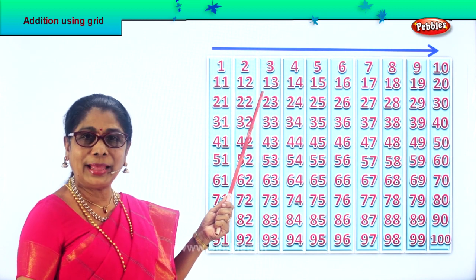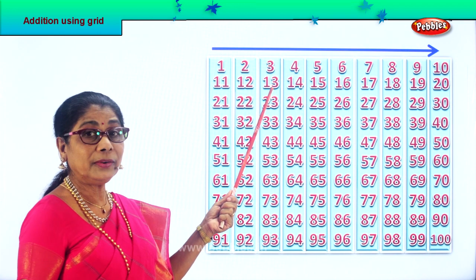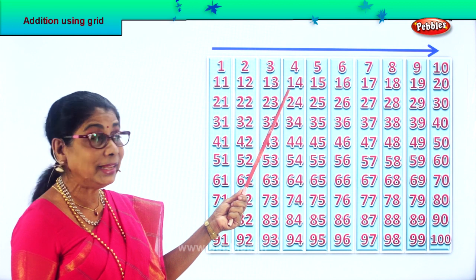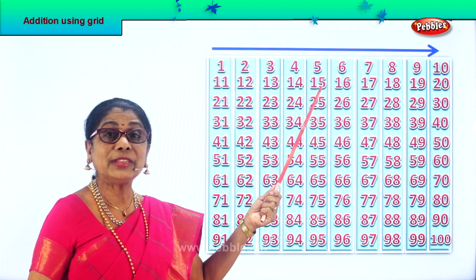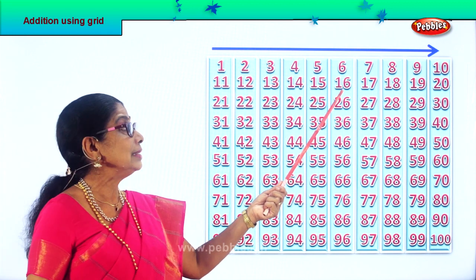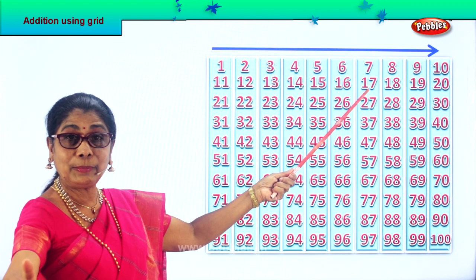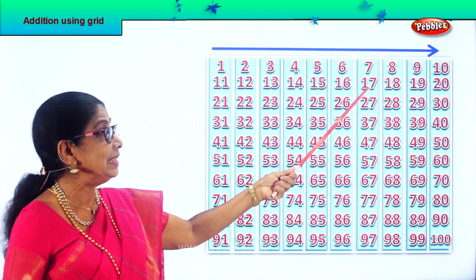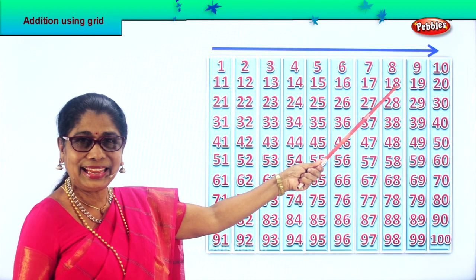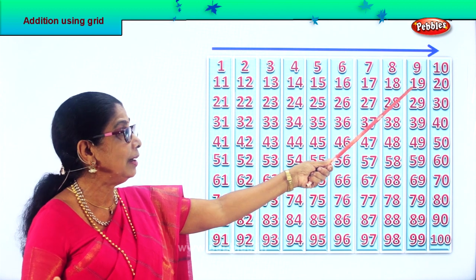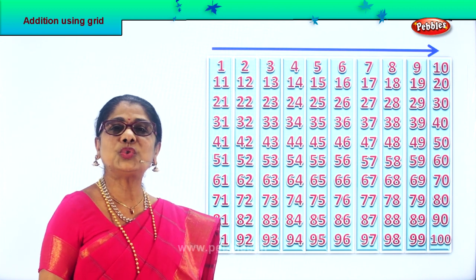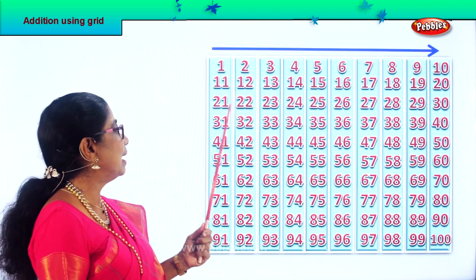Let's look at the next number: 11. If you add one more, 12. 12 plus 1 is 13. 13 plus 1 is 14. 14 plus 1 is 15. 15 plus 1 is 16. 16 plus 1 is 17. 17 plus 1 is 18. 18 plus 1 is 19. 19 plus 1 is 20.